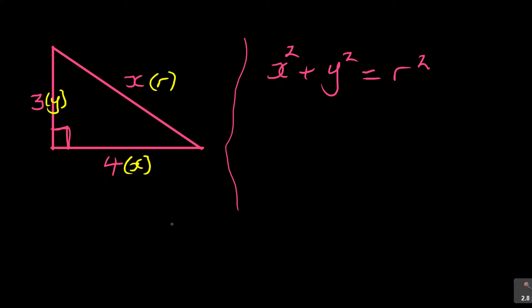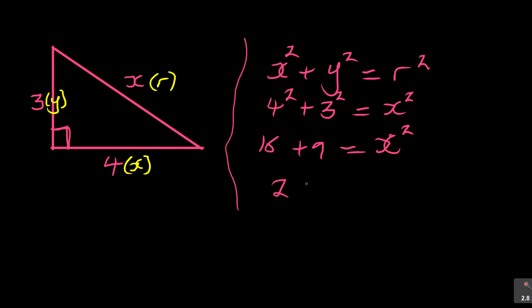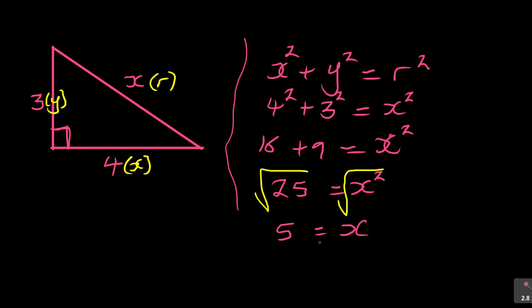You can see that 4 represents X, 3 represents Y, and the unknown side represents R. So now substitute: 4 squared plus 3 squared equals R squared. That gives 16 plus 9 equals X squared, so 25 equals X squared. Don't leave your answer there — square root both sides. The square root of 25 is 5, so X equals 5. This is the special 3-4-5 triangle found using the Pythagoras theorem.